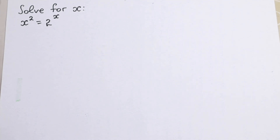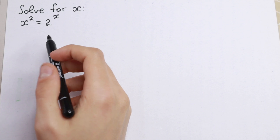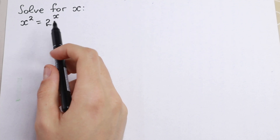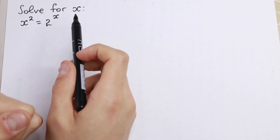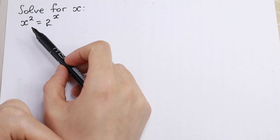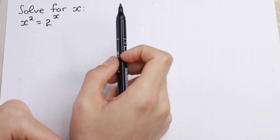Hello everyone! In this video we are going to solve this interesting Olympiad problem. We have x² equal to 2 to the power x. And on the first side this equation is an easy one, because there are obvious roots right here.